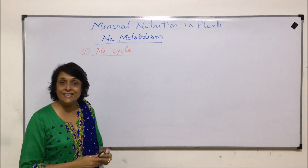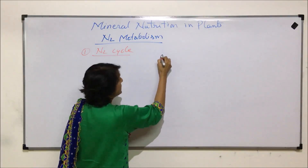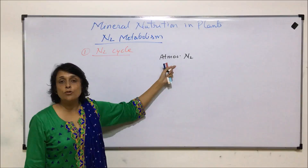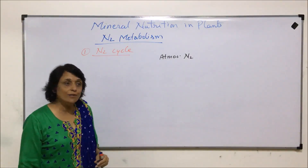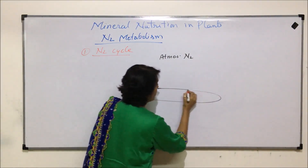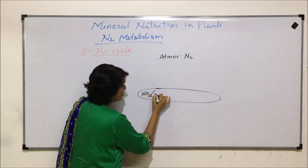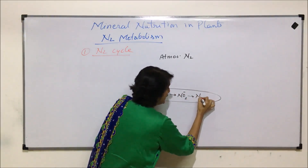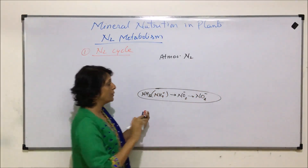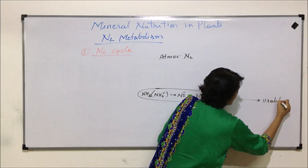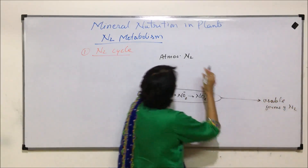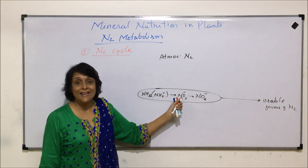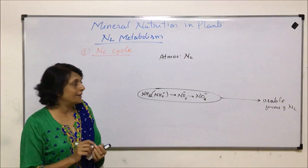Let us first understand how this movement of nitrogen takes place between the living and the non-living world. The source of nitrogen is the atmosphere — atmospheric nitrogen — which is molecular nitrogen. Molecular nitrogen cannot be used in this form; it has to be converted into usable forms. These usable forms are three: ammonia (actually ammonium ion), which gets converted into nitrites and then nitrates. These three are the usable forms of nitrogen, and they can all be absorbed by plants.